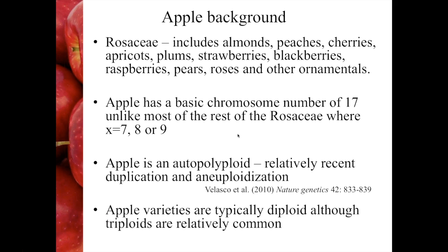We have a draft genome of apple, published in 2010, and from that genome we could see that apple is an auto-polyploid. It appears to have had a relatively recent duplication of the genome followed by aneuploidisation. Apple varieties are typically diploid, but if you screen through germplasm collections you'll find quite a lot of triploids, selected predominantly because of fruit size — triploids are typically bigger.